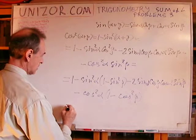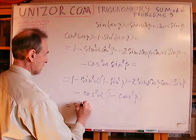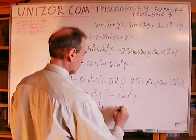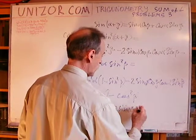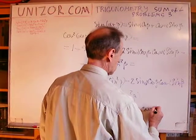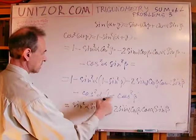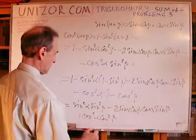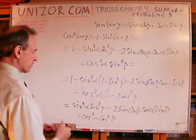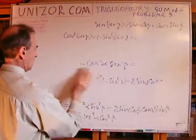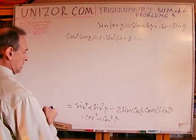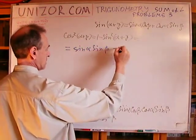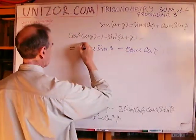If I multiply sine squared by one I get sine squared. Cosine squared by one gives cosine squared, which added together with a minus sign gives minus one. The one here and that one reduce. What remains is plus sine squared alpha sine squared beta, minus two sine alpha cosine beta cosine alpha sine beta, plus cosine squared beta.